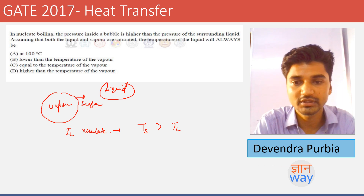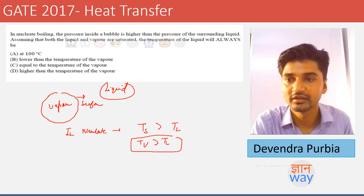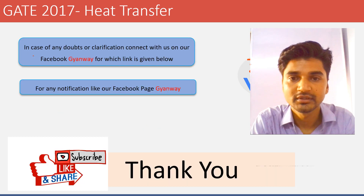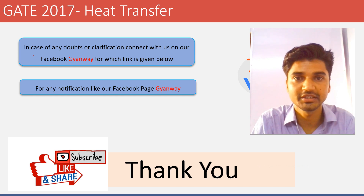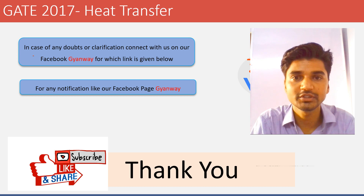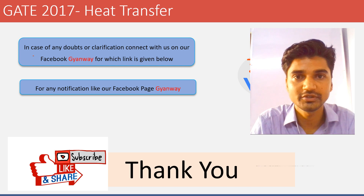Since T_vapor is always greater than T_liquid in nucleate boiling, the liquid temperature is always lower than the vapor temperature, so option B is correct. That covers the heat transfer portion of the Gate Chemical Engineering 2017 paper. For any clarification or doubt, post a comment below and we are ready to help. Goodbye until the next video.